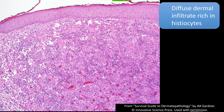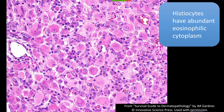They also tend to have some background inflammatory cells including eosinophils. Sometimes they can have foamy cells and Touton giant cells, so even though I think they're probably two separate things etiologically, microscopically they really have a spectrum of morphologic features that overlap.